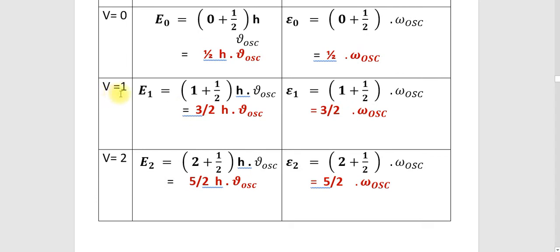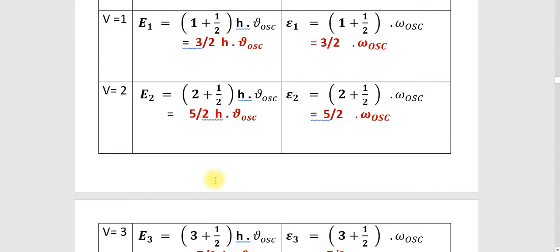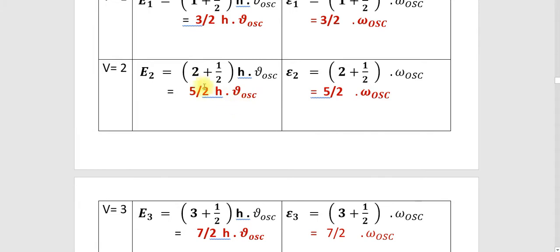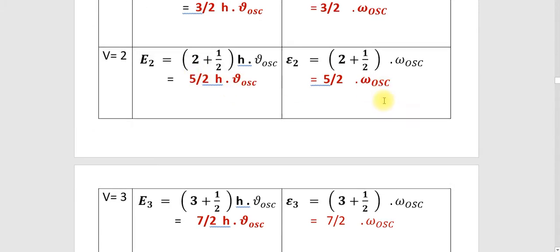For V equal to 1, E1 equals 1 plus half h nu_oscillation, that is 3/2 h nu_oscillation. And ν̃1 equals 1 plus half omega_oscillation, that is 3/2 omega_oscillation. For V equal to 2, we get 5/2 h nu_oscillation, and ν̃2 equals 5/2 omega_oscillation. The table continues, with values in joules using h nu_oscillation and in wave numbers using omega_oscillation.